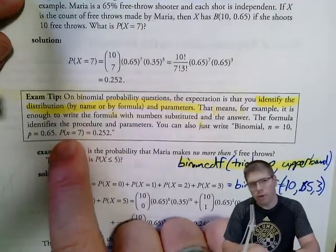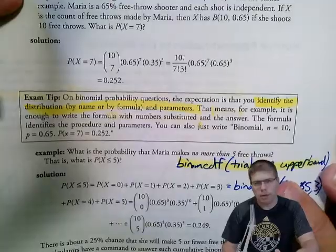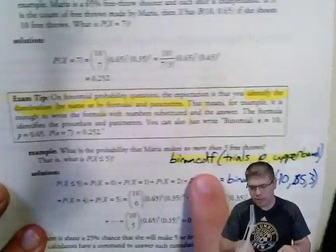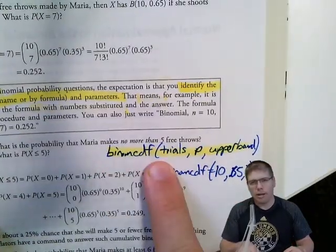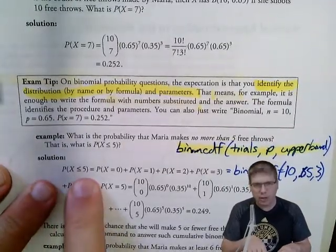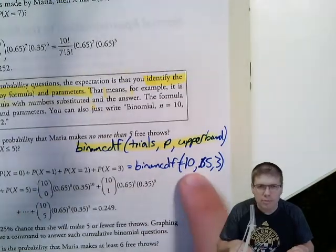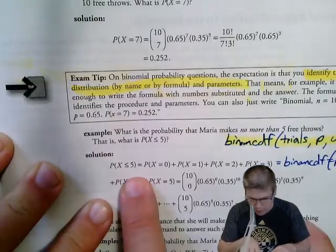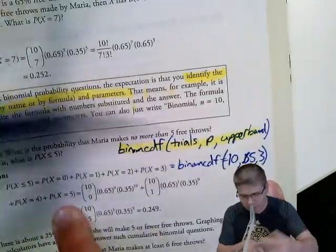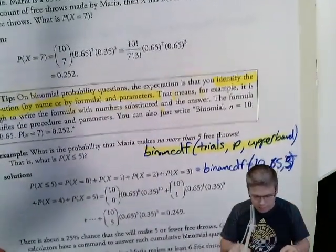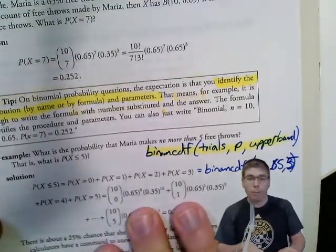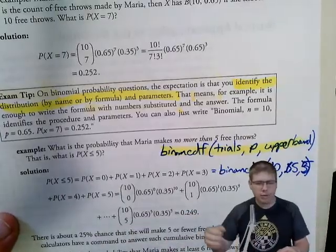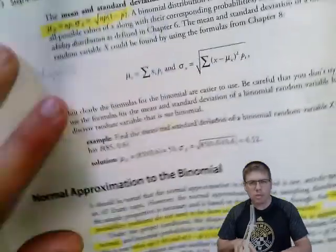Once you've defined the distribution and parameters, you can go straight to a probability answer without showing the full formula. BinomCDF does the cumulative distribution — it adds up probabilities from zero up to your specified value (less than or equal to). For example, binomCDF(10, 0.65, 5) gives the probability of at most 5 successes. For greater than, use one minus that; for at least 5, subtract away binomCDF(10, 0.65, 4).